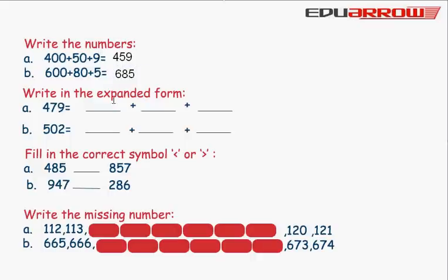Write in expanded form: 479 equals 400 plus 70 plus 9.